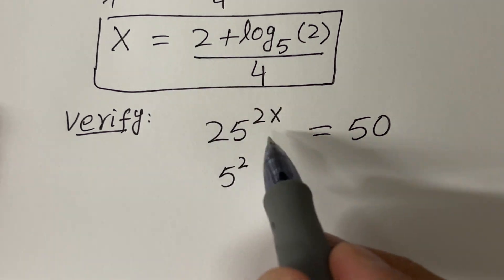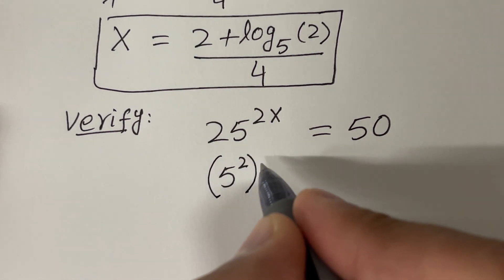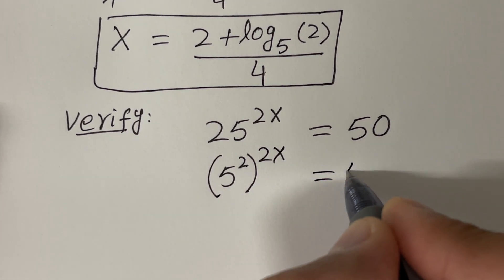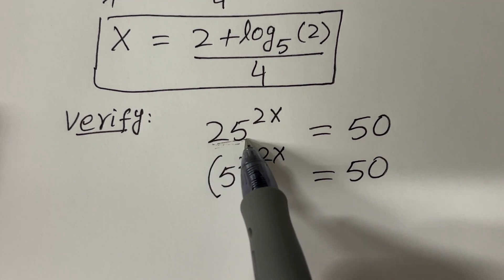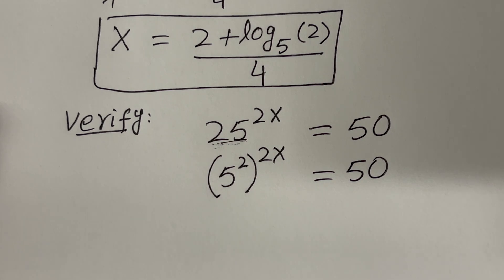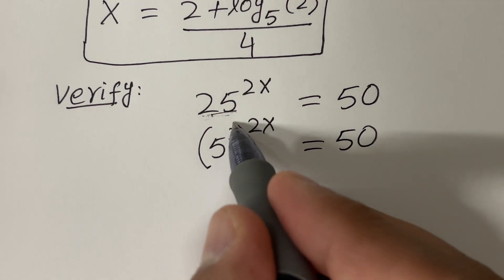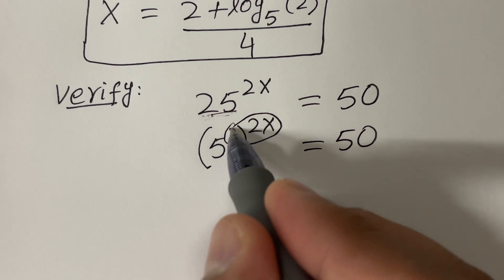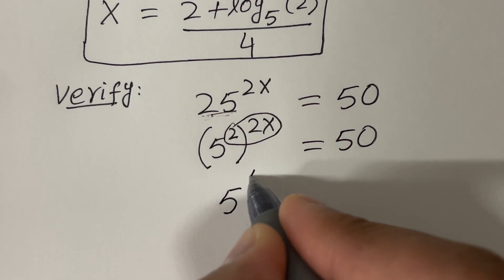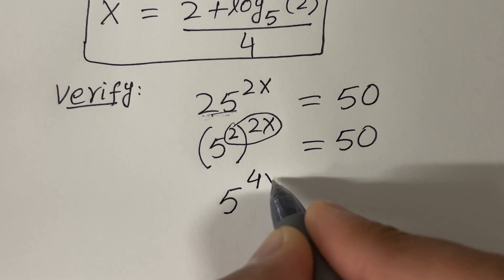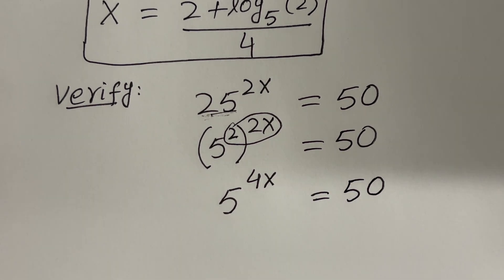Before applying x, I'm just trying to simplify this equation. We have the exponent 2x and the right-hand side equal to 50 — what I have done is convert 25 as 5 raised to the power 2. And now we can multiply the exponent. So that will be 5 raised to the power 4x, and the right-hand side is equal to 50.